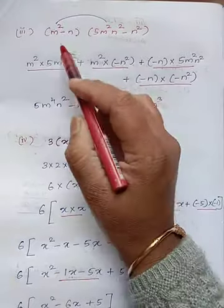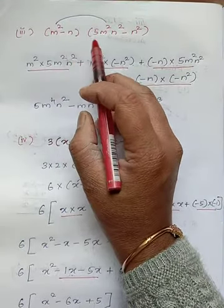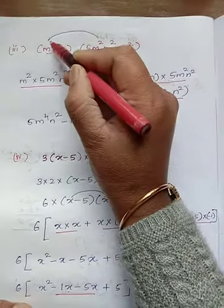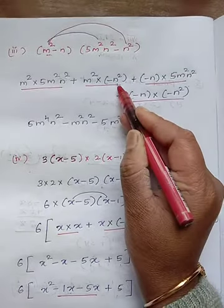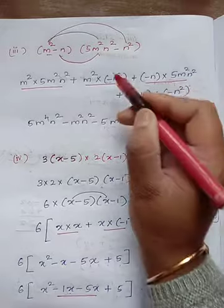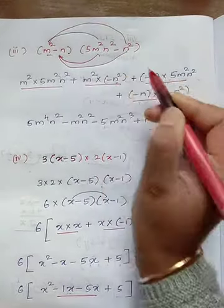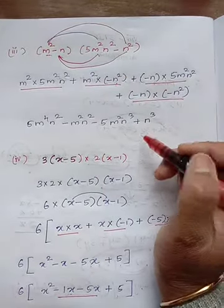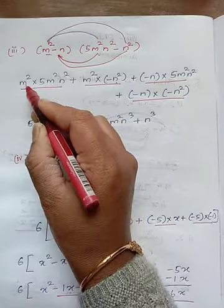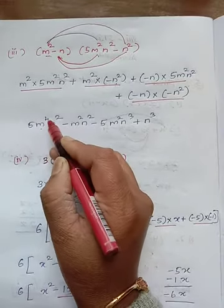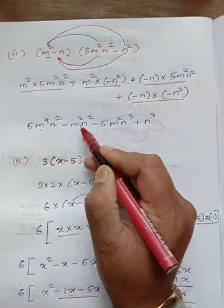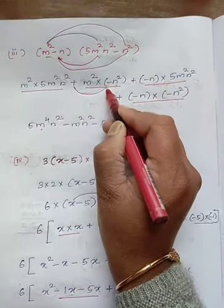Next is the third problem: (m² - n)(5m²n² - n²). First, m² into 5m²n², next m² into minus n², then minus n into 5m²n², and minus n into minus n². We have 1 and 5, so 5. m² times m² is m to the power 4. Remaining, you have n square: m² into n² is m²n². Plus into minus is minus.